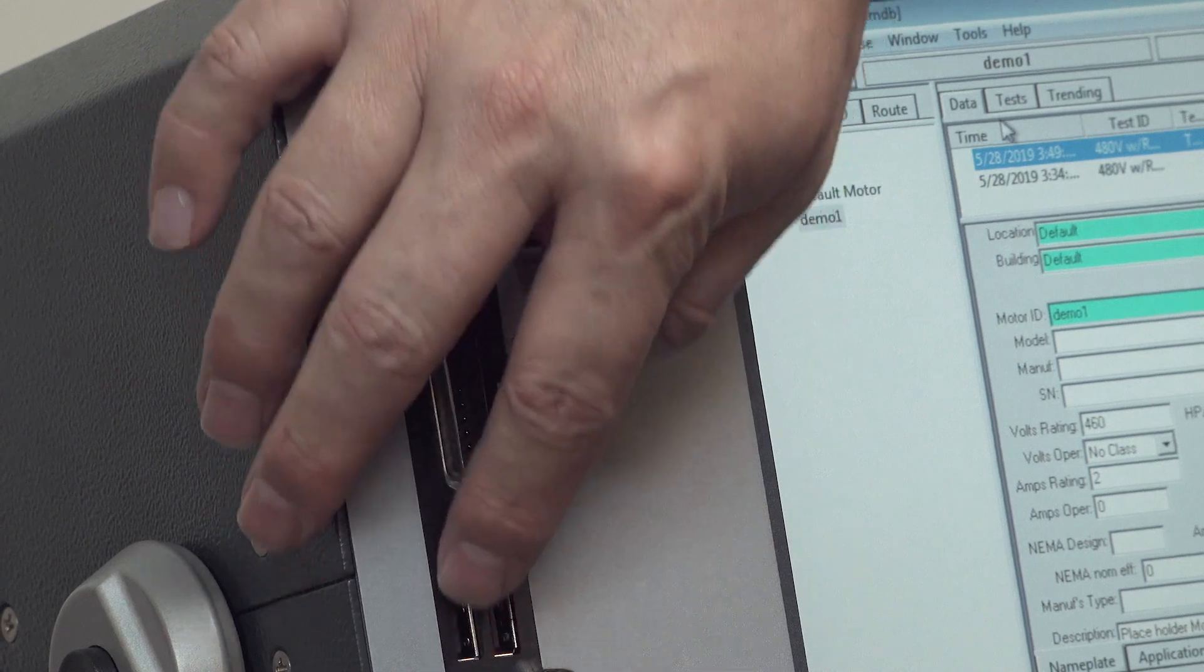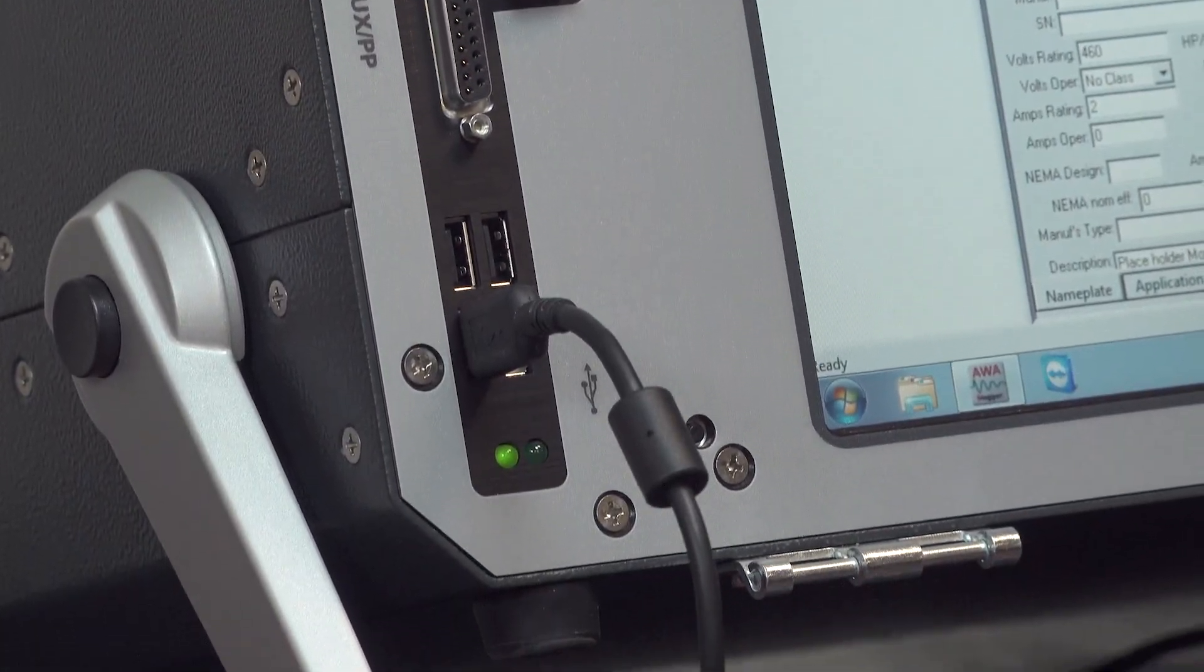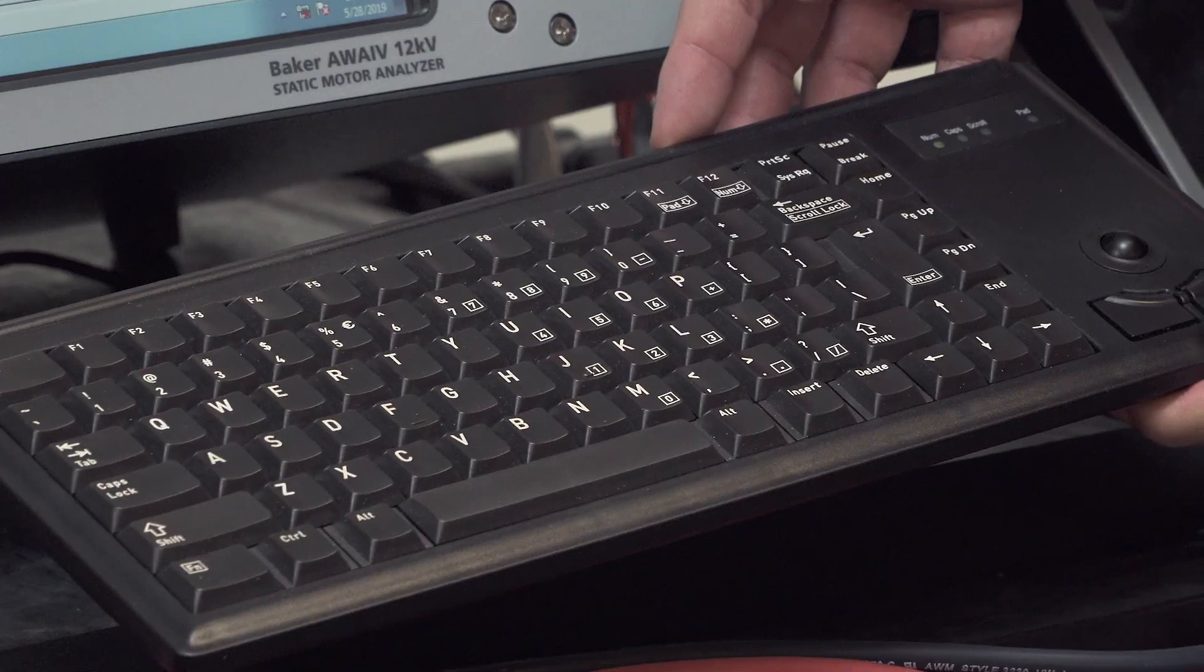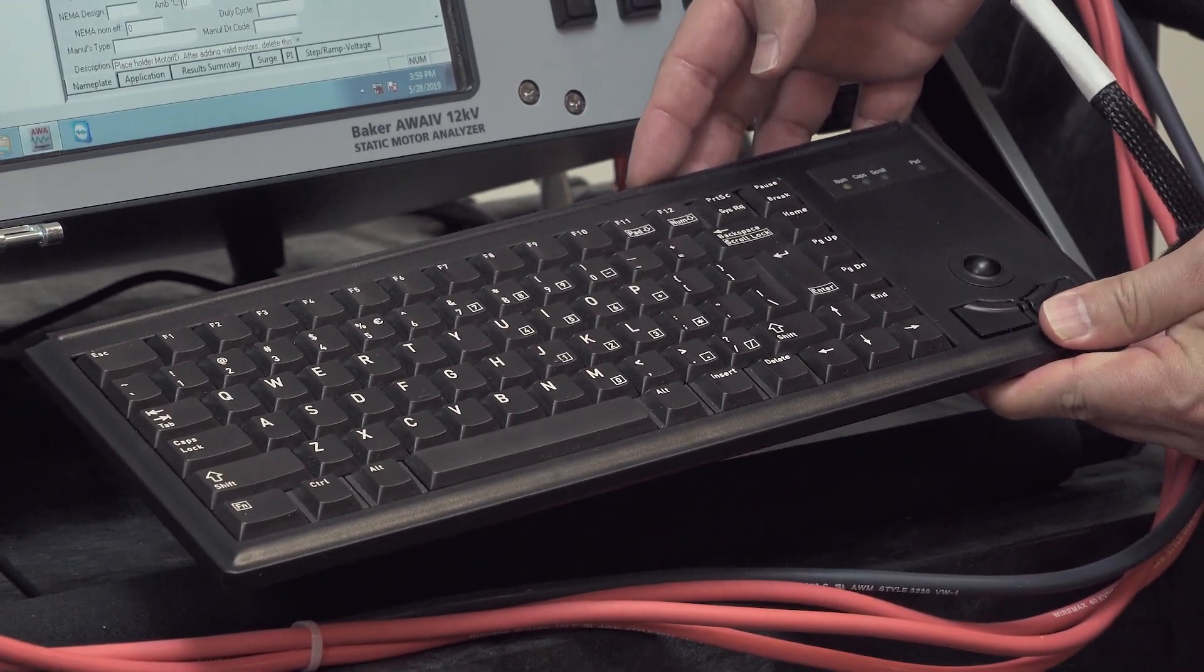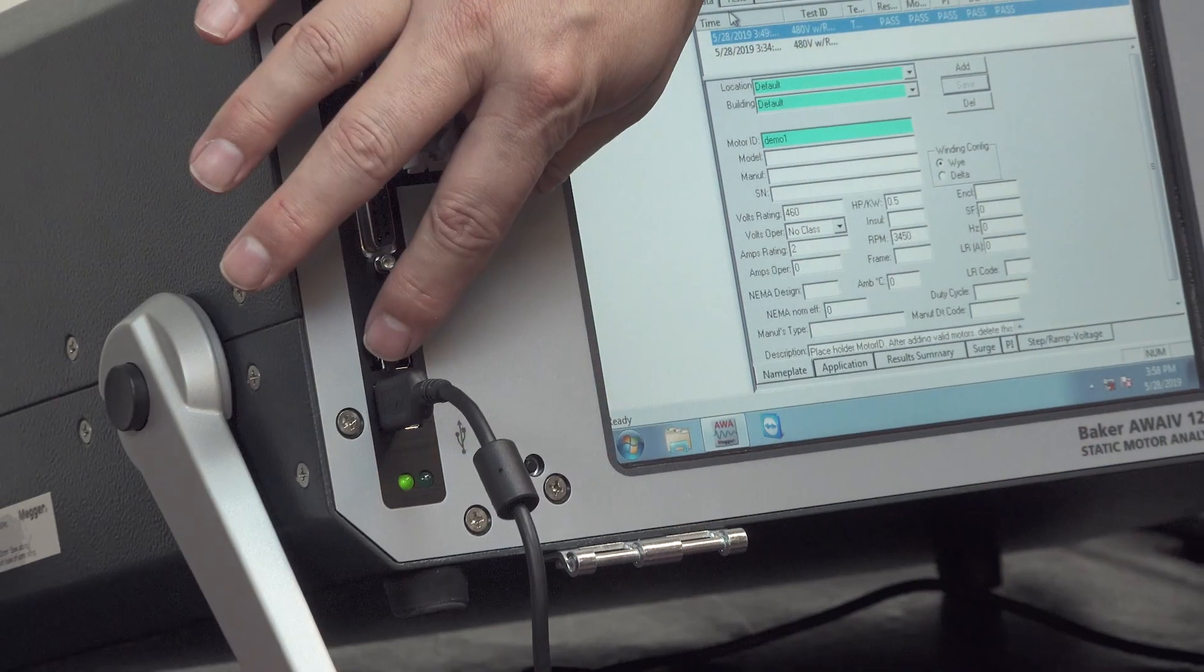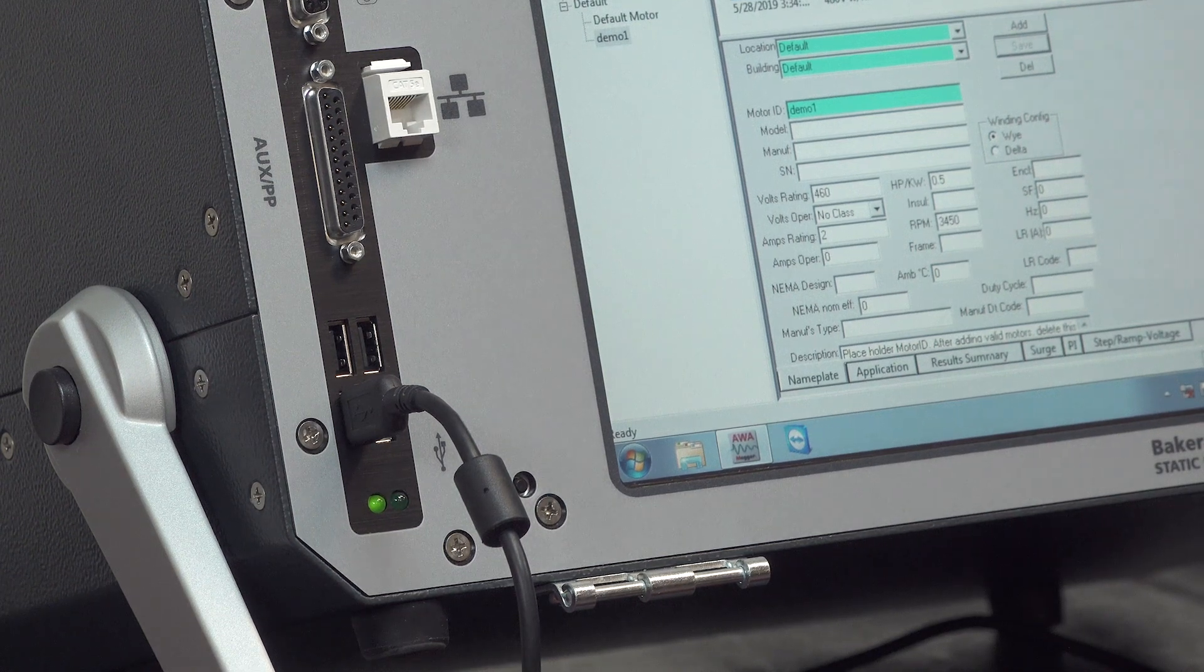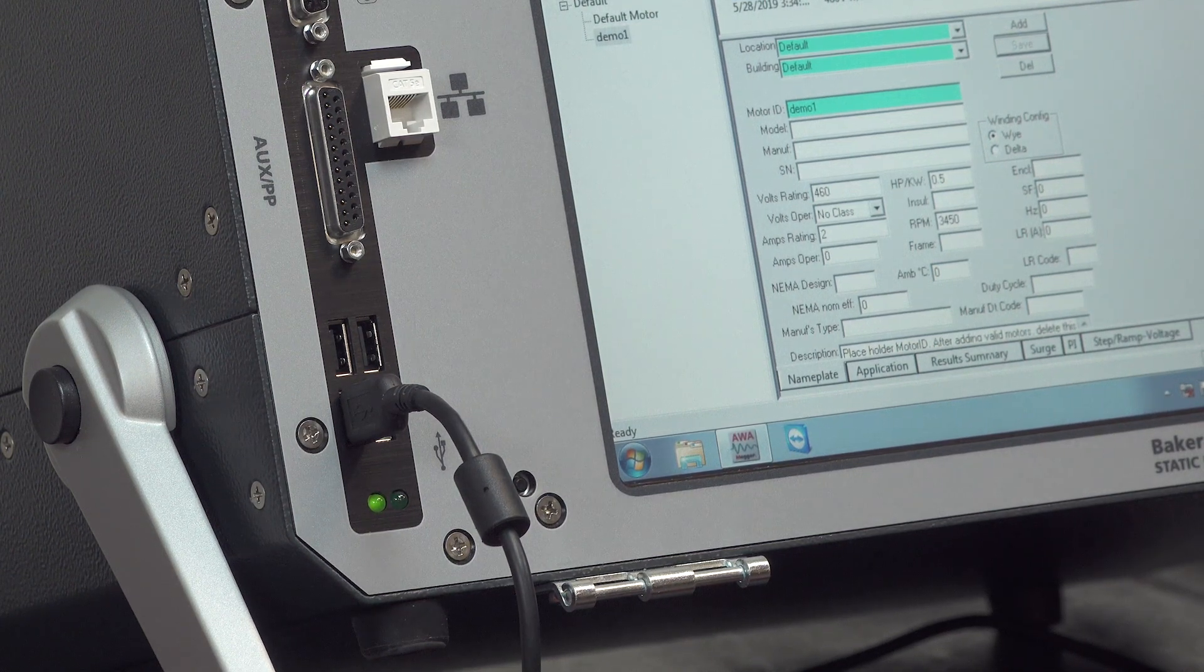Below that we have four USB connectors, which you can see the combination keyboard and mouse, which is supplied with the AWA, is connected to. We can also connect USB memory sticks to transfer data to and from the AWA.